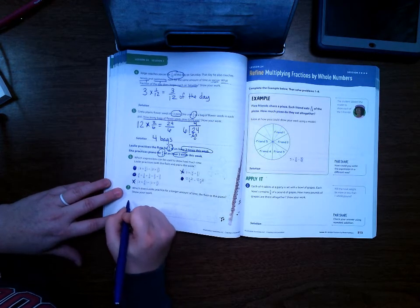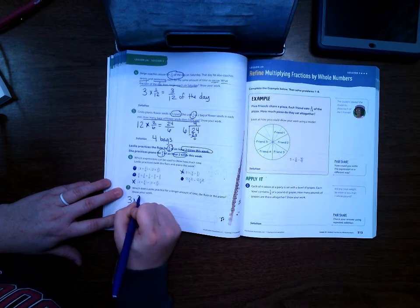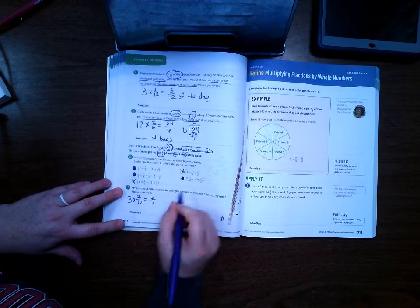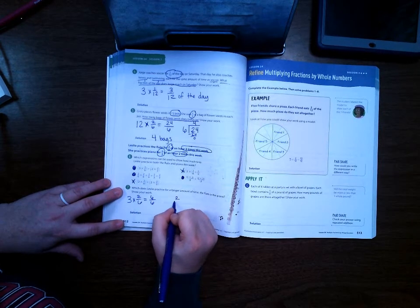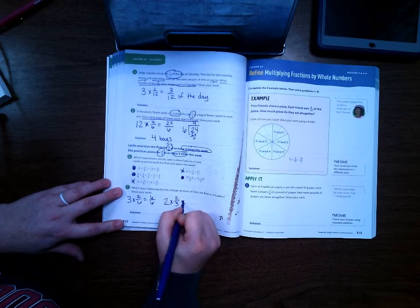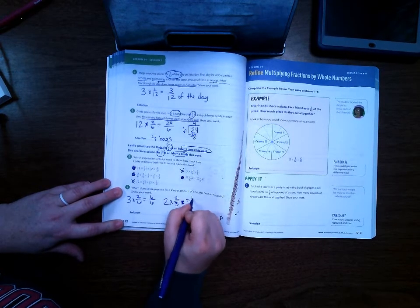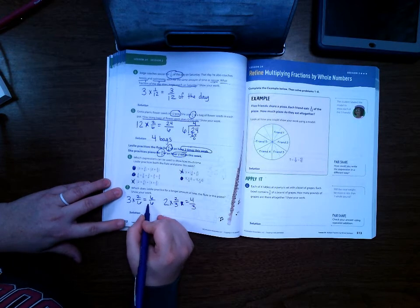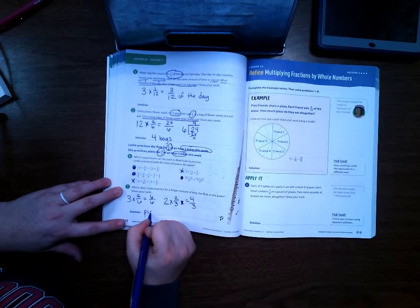Which does Leslie practice for a longer amount of time? The flute or the piano? Show your work. So let's do three times two-sixths, which is six-sixths. And then we can do two times two-thirds, which equals two times two is four-thirds. Well, six-sixths is one whole, so that means that she practices the piano longer.